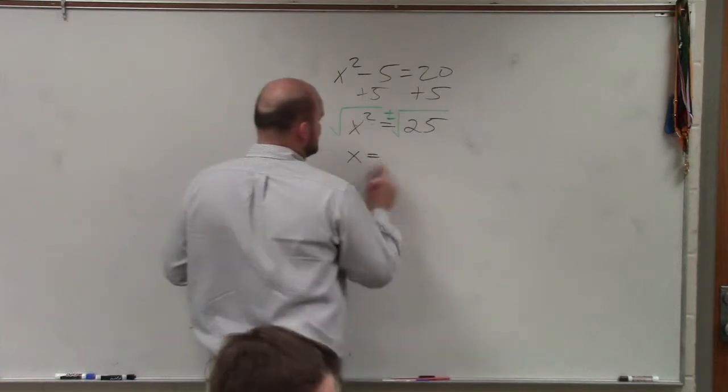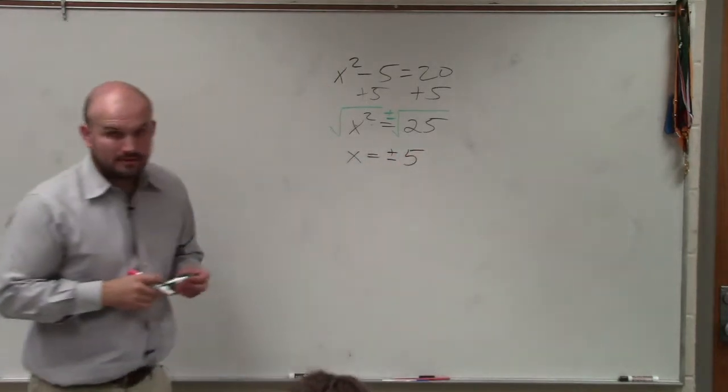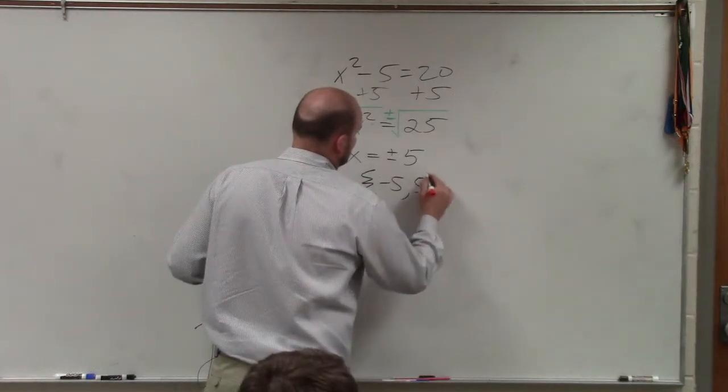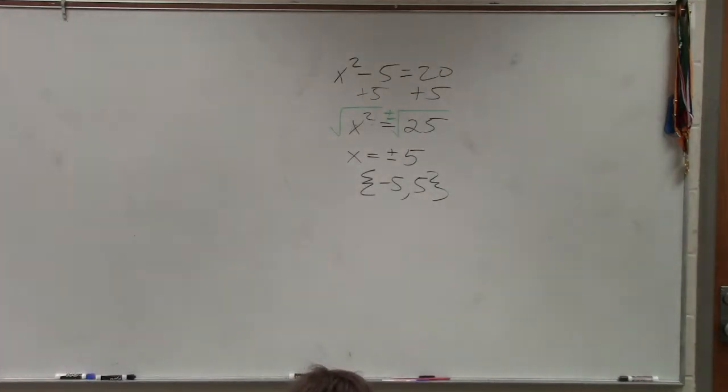Therefore, x is equal to plus or minus 5. And then we will also write it as a solution set of negative 5, comma 5. That's just like the set of our solutions that I put between brackets, just a different way to write it.